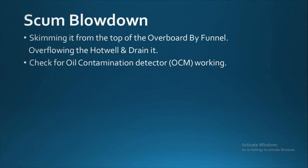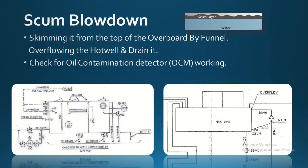The next action we have to take is to do the scum blowdown. We have to perform the scum blowdown by skimming it from the top, overflowing the hot well, and then draining the scum. As you can see on the right figure, there is an overflow line, and on the left, there is a funnel provided to collect the scum. We have to check for the oil contamination monitor (OCM), which gives an alarm if any kind of oil is entering the hot well.